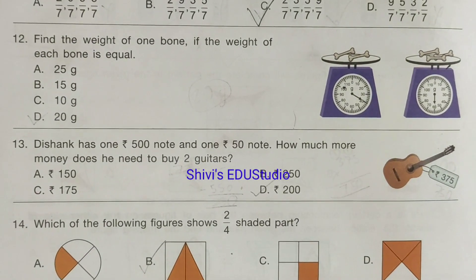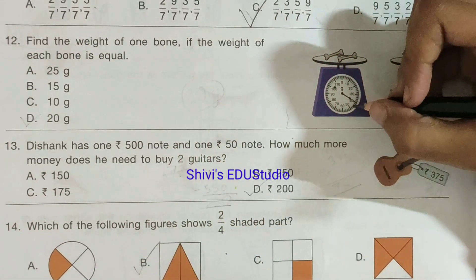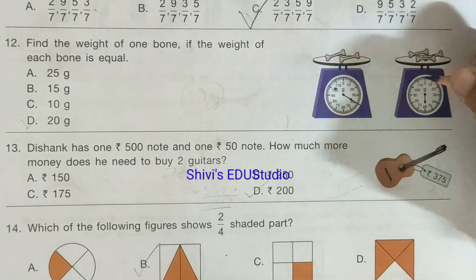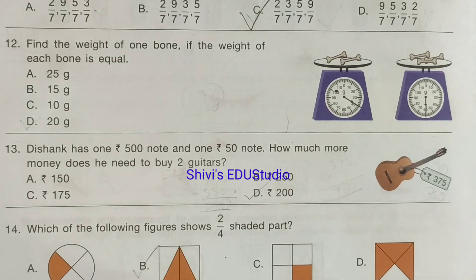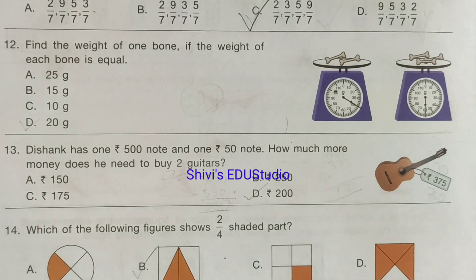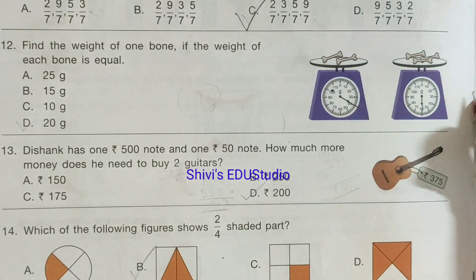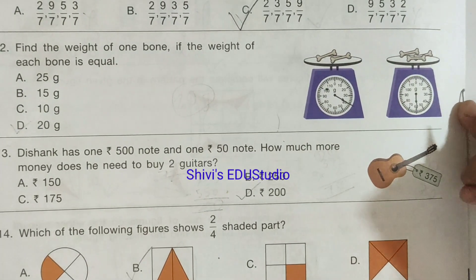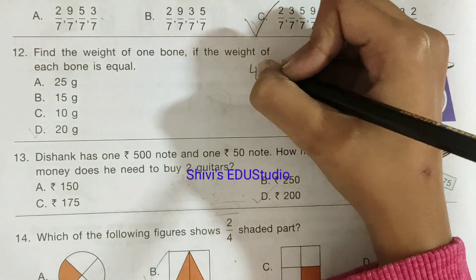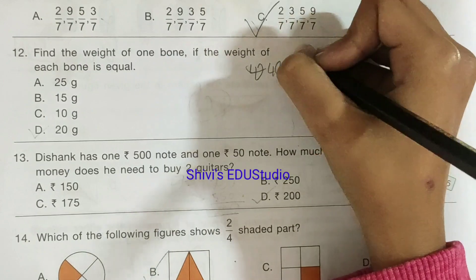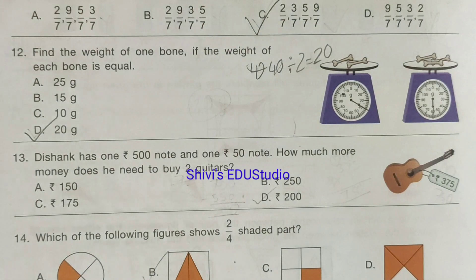Question number 12: Find the weight of one bone if the weight of each bone is equal. We have 2 bones weighing 40 grams and 3 bones weighing 60 grams. Dividing 40 by 2, one bone equals 20 grams. So the answer is 20 grams.